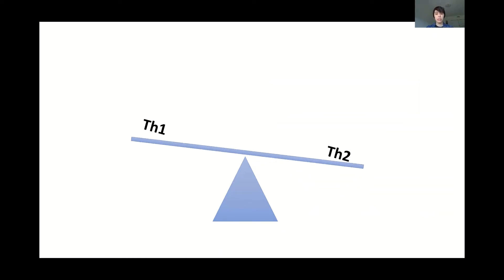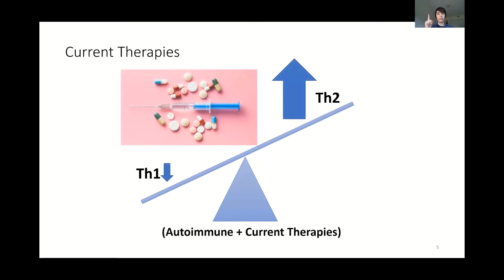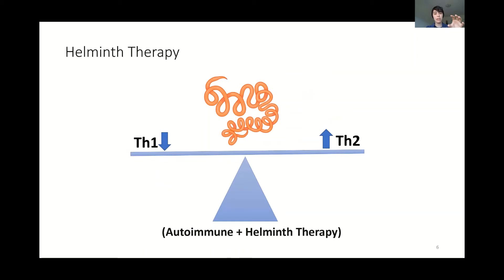Current therapies focus on increasing Th2; however, they increase it too much, which causes other issues such as making you susceptible to infection. It has been theorized and proven in other autoimmune diseases that helminth parasite treatment is able to actually restore balance when there is an autoimmune response, bringing both immune responses back into balance for a healthy person.